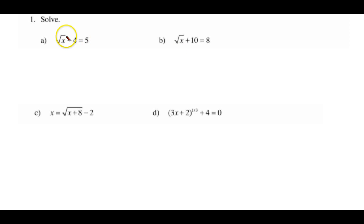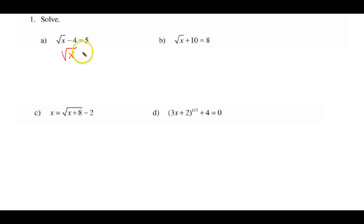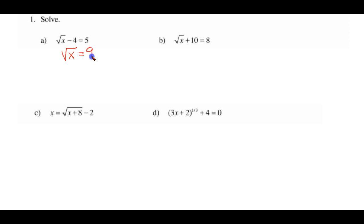The first thing we want to do is to isolate the radical. So we're going to take the negative 4, transpose it to the other side — it becomes a positive 4. 4 plus 5 is 9. We've isolated the radical sign.